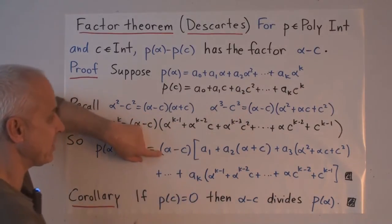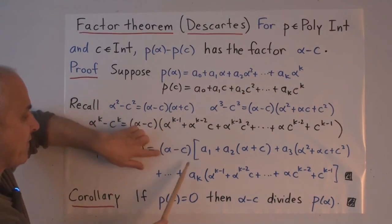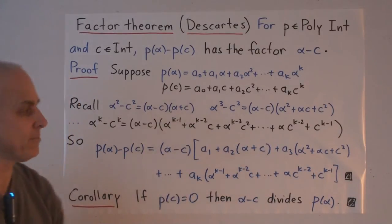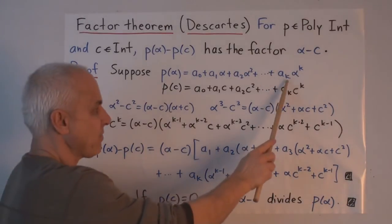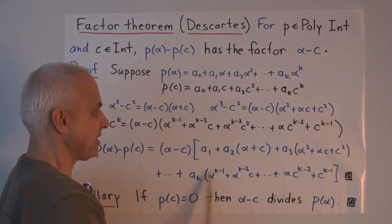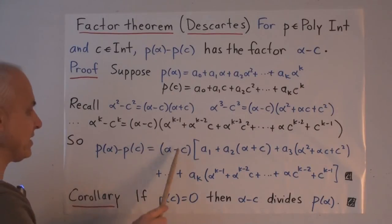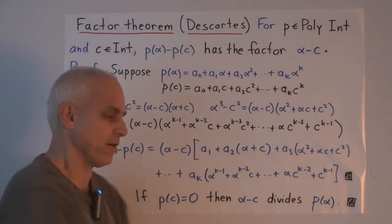This term minus this term is a common factor of A two. And then it's alpha squared minus C squared, which according to this has a factor alpha minus C. The other factor is alpha plus C. All the way up to the kth one, which has A sub K times the difference here, which according to this is alpha minus C times this expression. So we plop that into there.